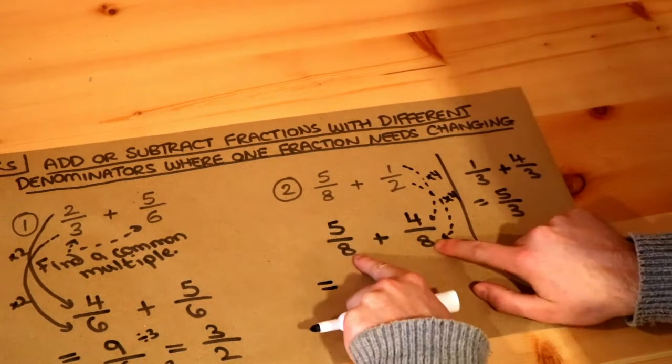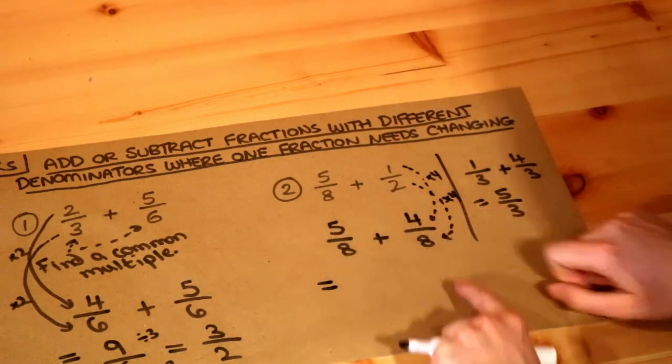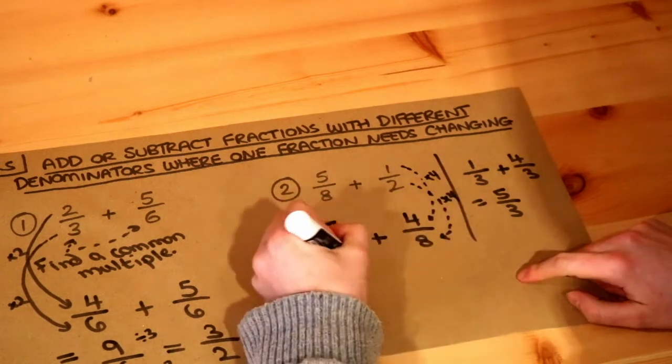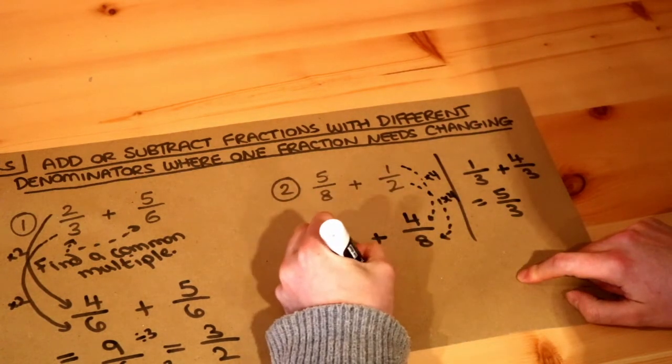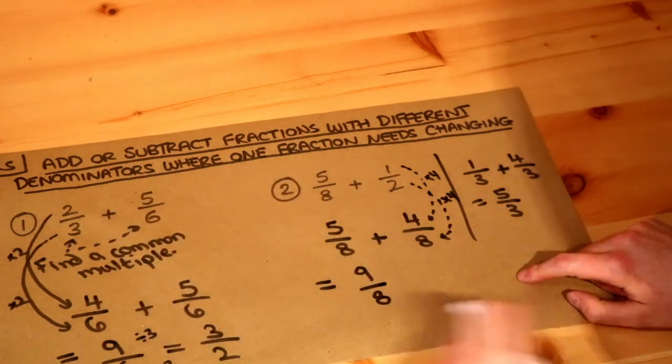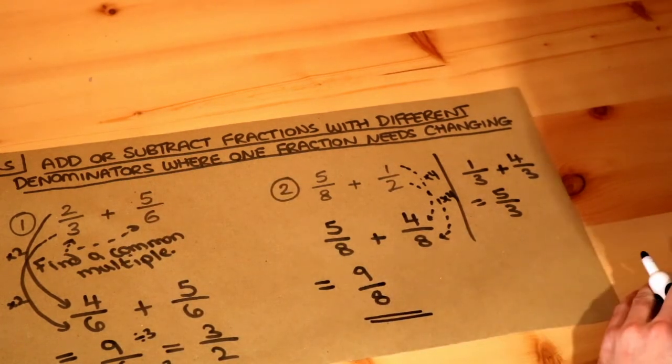Now we've got the same denominator again so we can just add the numerators. Five plus four is nine. If we've got five eighths and we add four eighths, in total we have nine eighths and that is the final answer. We can't simplify that any further.